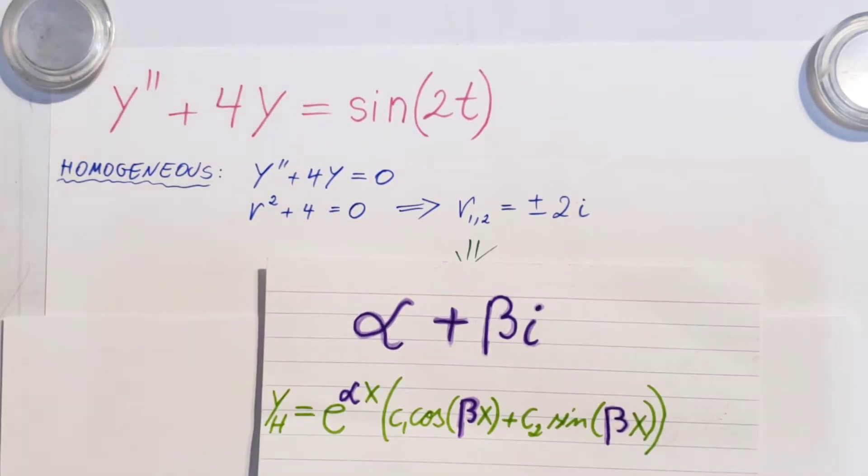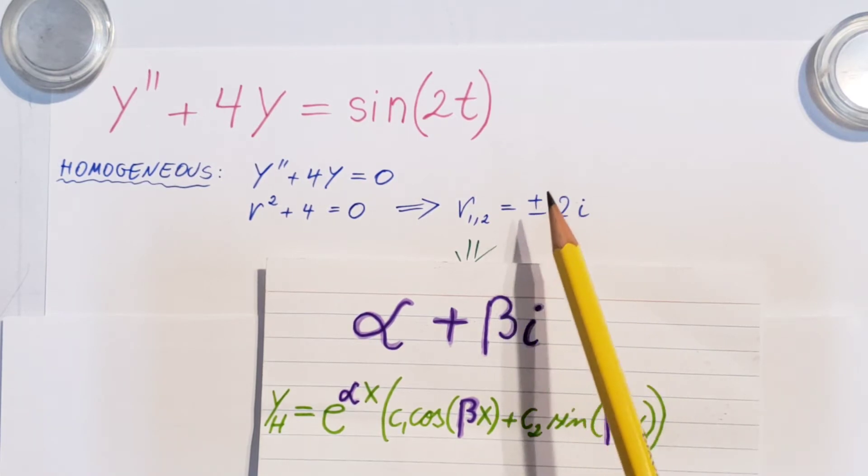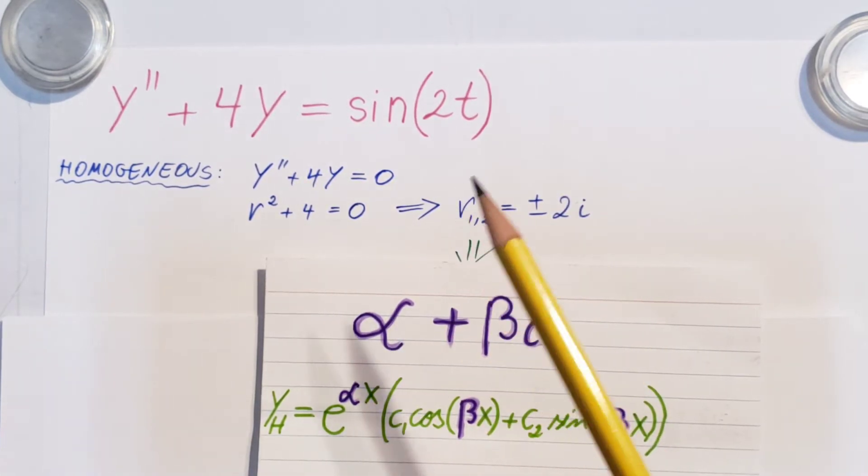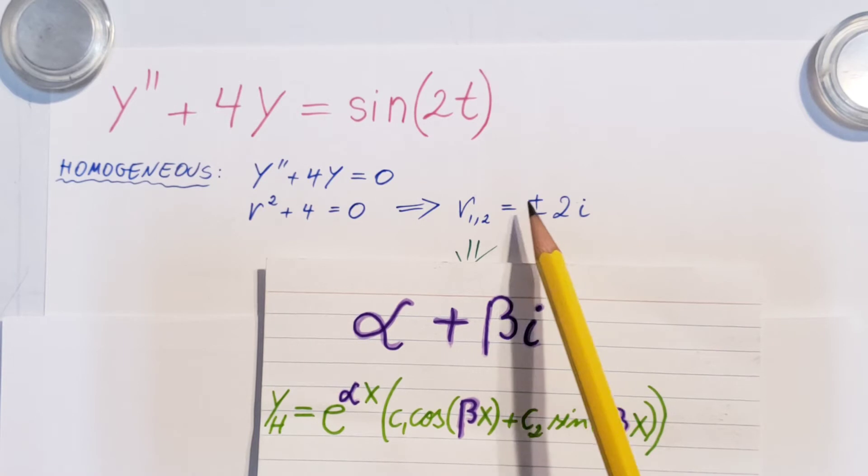Now we know that there's three scenarios whenever we're working with homogeneous solutions. We have two real roots that are different, we have two real roots that are repeat, and then we have the complex roots. Now when we have this scenario, this is the formula we need to follow.